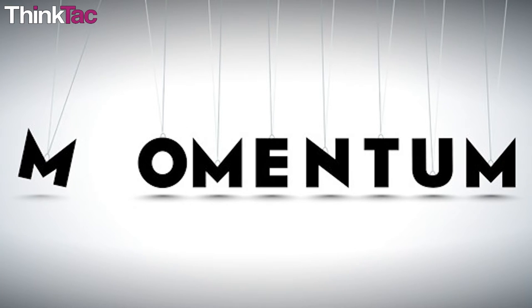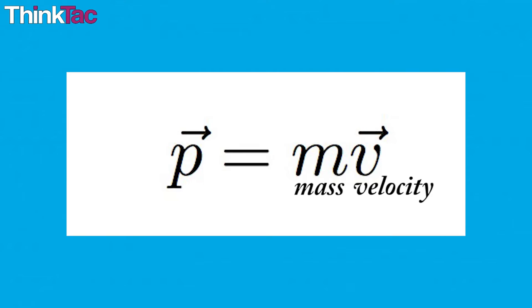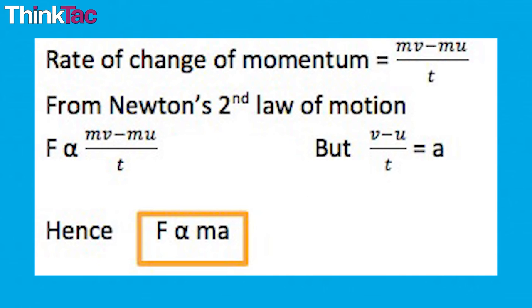Momentum or linear momentum is the product of the mass and velocity of an object. The rate of change of momentum of an object is nothing but a measure of the net force acting on the object. This is nothing but Newton's second law.